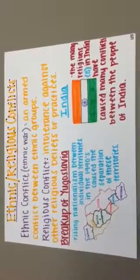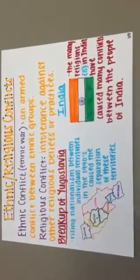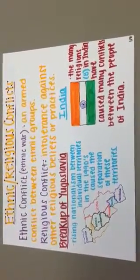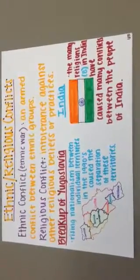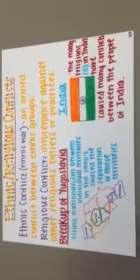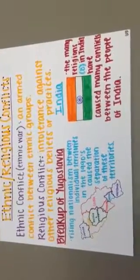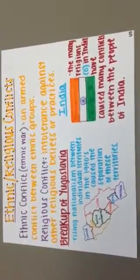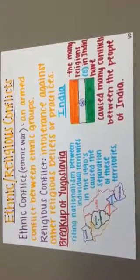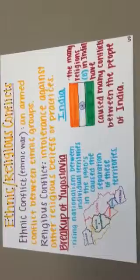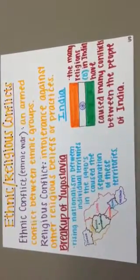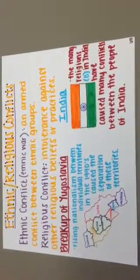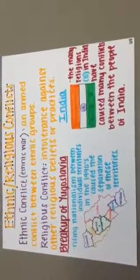Ethnic and religious conflicts. Ethnic conflicts are armed conflicts between ethnic groups, and religious conflicts are usually based on intolerance between different religions. Two examples are the breakup of Yugoslavia, which was once a united state with many different ethnic groups, and ended up breaking into seven separate states. Also, India and Pakistan used to be one united country, but differences in religion led to a split — Pakistan becoming a Muslim-majority country and India becoming a Hindu-majority country.